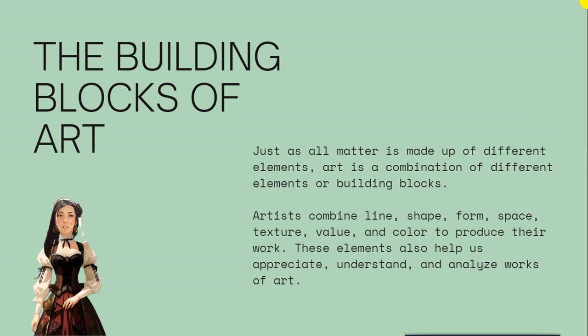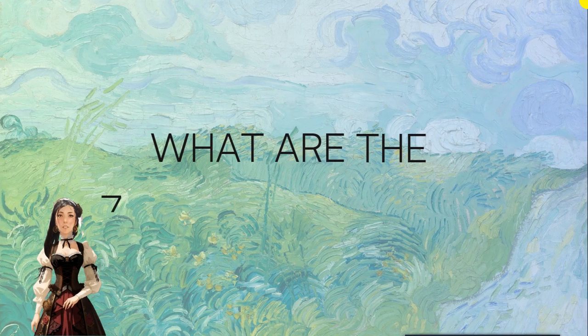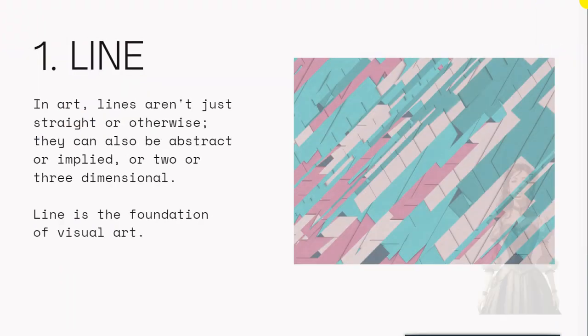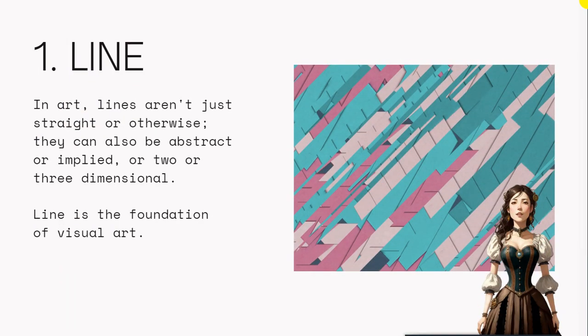These elements also help us appreciate, understand, and analyze works of art. So what are the seven elements of art? We're going to be talking about them one at a time. I'm going to give examples to help you guys understand. Number one is line. In art, lines aren't just straight or otherwise — they can also be abstract or implied lines.